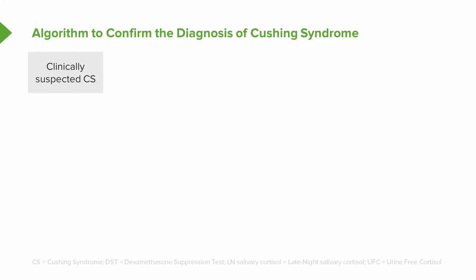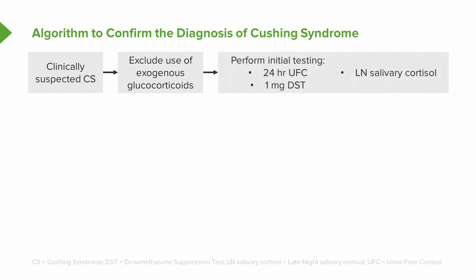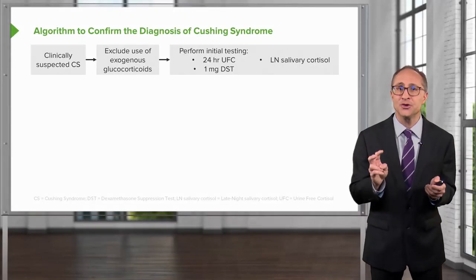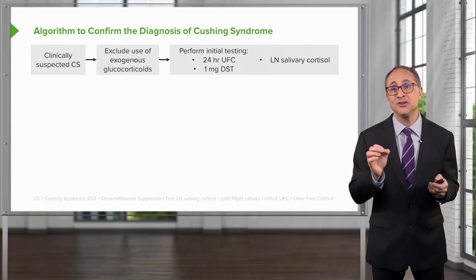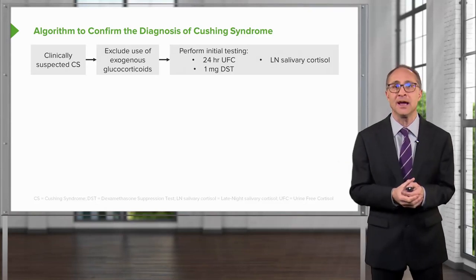Let's go through an algorithm to confirm the diagnosis of Cushing syndrome. When you clinically suspect Cushing syndrome, the first step is to exclude exogenous glucocorticoids. Once that's done, we move on to initial testing. These tests could include a 24-hour urinary-free cortisol test, a late-night salivary cortisol test, and a 1-milligram dexamethasone suppression test. The 24-hour urine-free cortisol and the late-night salivary cortisol test need to be repeated if they're positive to confirm the diagnosis.